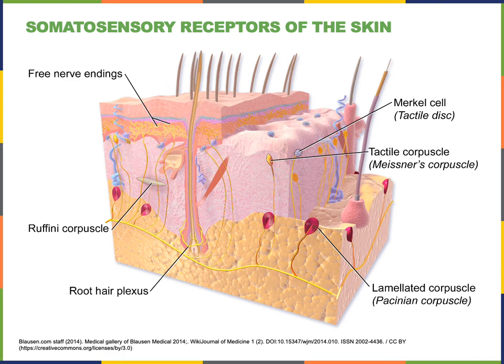There are also specialized receptor cells found in the epidermis known as Merkel cells. The Merkel cells detect continuous light pressure as well as low frequency vibrations on the surface of the skin. When the Merkel cells are stimulated, they release neurotransmitter onto the dendrites of afferent neurons, which are known as the Merkel discs or tactile discs, and then the afferent neuron relays information into the central nervous system.